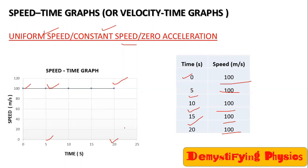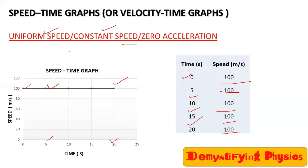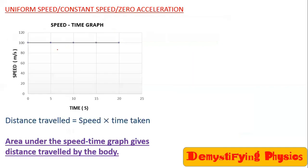In the distance-time graph, we can find out the speed of the body by finding the slope. Here in the speed-time graphs, we can find two things: acceleration and the distance traveled.